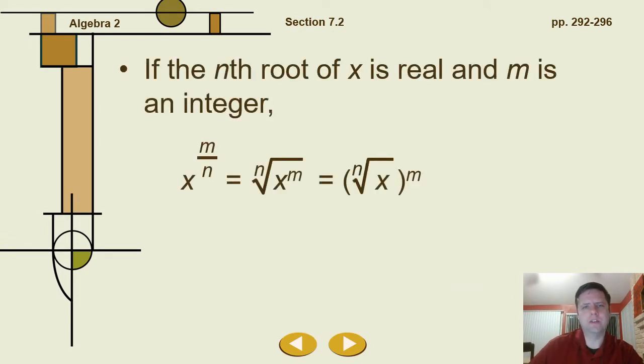If the nth root of x is real and m is an integer, then x to the m over n can be rewritten as the nth root of x to the m. Or you can do the nth root of x and then raise all of that to the m power. So these are equivalent expressions. You can do it in either order. You either take the root first and then raise it to the power, or you can raise the power first and then take the root of it afterward.